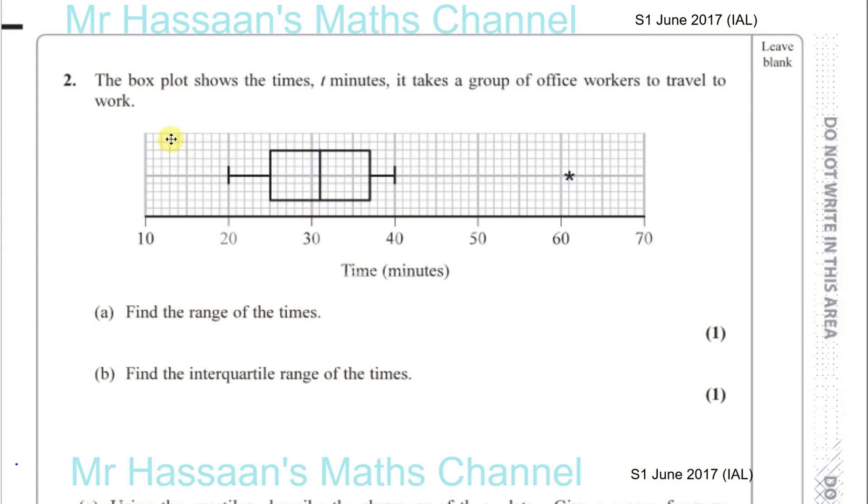Okay, question number two from S1, June 2017, International A-Level. The box plot shows the times T it takes a group of office workers to travel to work. Find the range of the times.